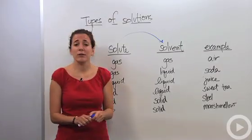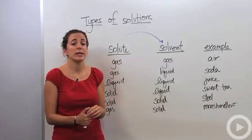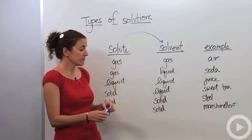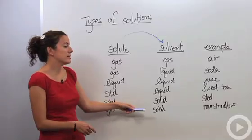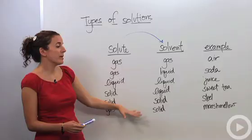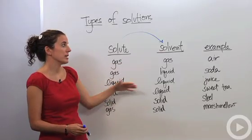Solid dissolving in solid, steel or any type of metal alloy actually is a mixture of solids. Gas dissolved in solid would be like foams or marshmallows. So these are different types of mixtures that you'll see in different mediums that they're actually in.